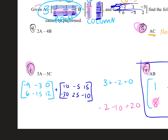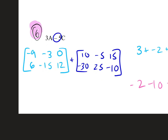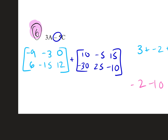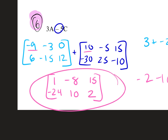Adding the two resulting matrices together: negative nine plus ten is one, negative three plus negative five is negative eight, zero plus fifteen is fifteen, six plus negative thirty is negative twenty-four, negative fifteen plus twenty-five is ten, twelve plus negative ten is two.